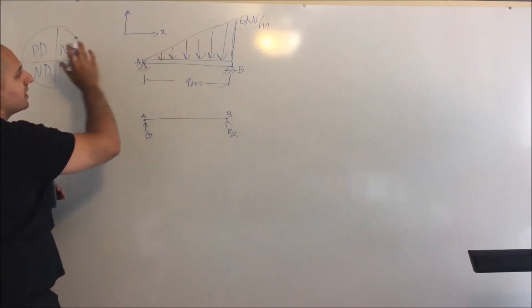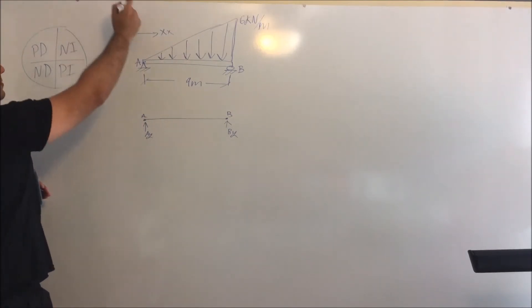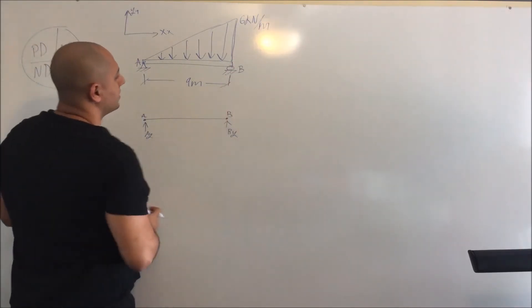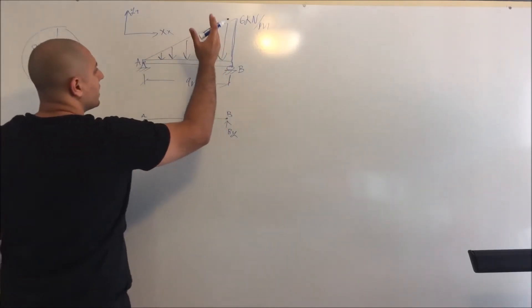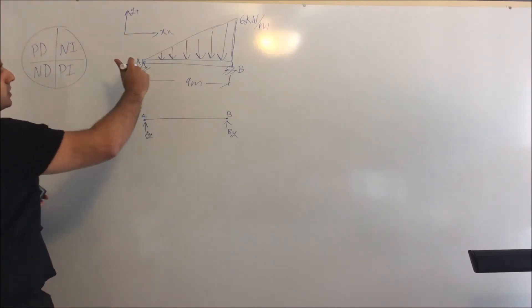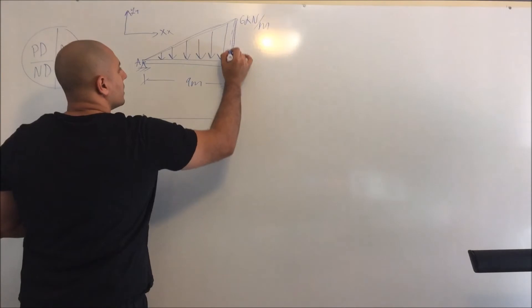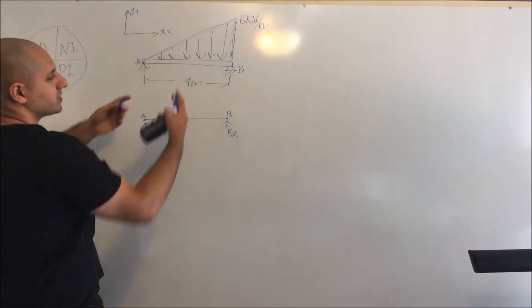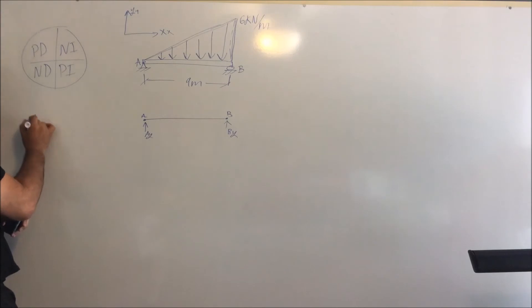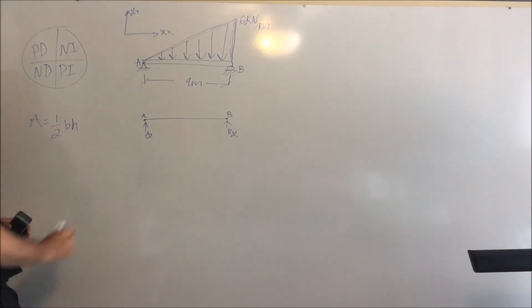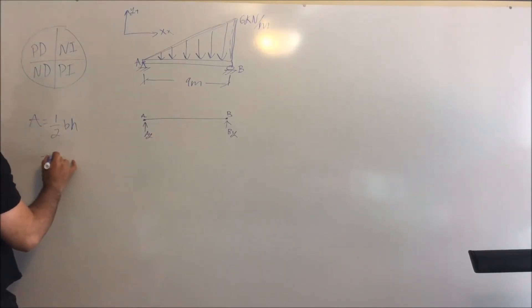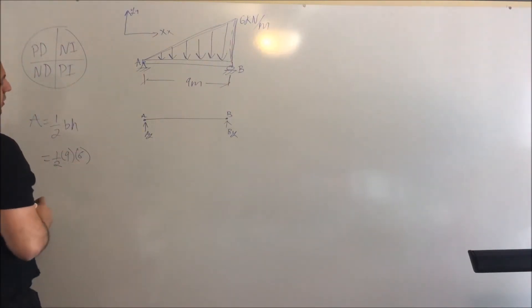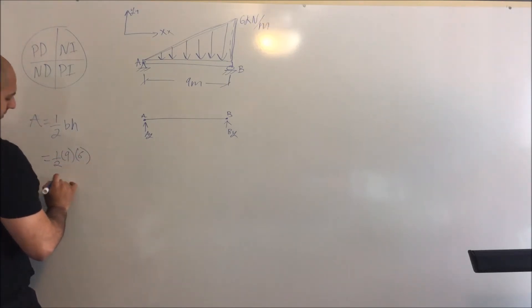In this case, anything to the right is X positive and anything up is Y positive. So A_Y is in the positive direction and B_Y is in the positive direction. From the distributed load we have a resultant force. The distributed load has a triangle shape, so the resultant force is just the area — one-half base times height. Our base is nine and our height is six: nine times six is fifty-four, divided by two gives us 27.